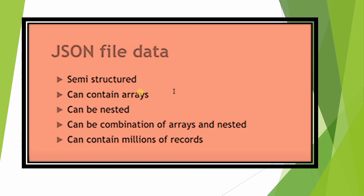If you've learned Java, Python, or any programming language, you'll understand arrays. Arrays store multiple records and use indexing. Dealing with JSON array data in Snowflake means extracting array records using indexing. We'll also use functions like ARRAY_SIZE to show the maximum size of an array. JSON data can be nested, can be a combination of arrays and nested data, and can contain millions of records.